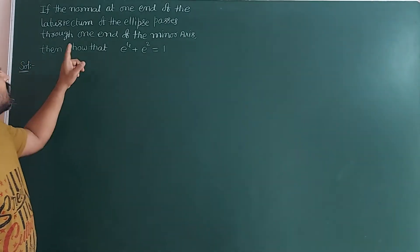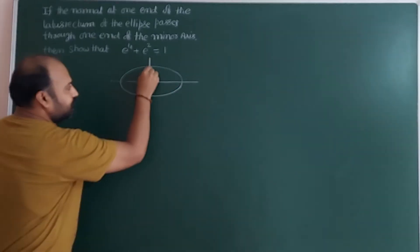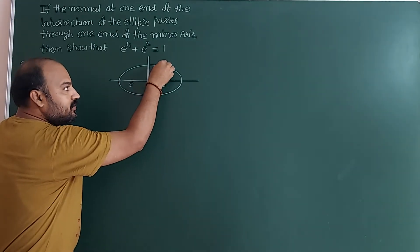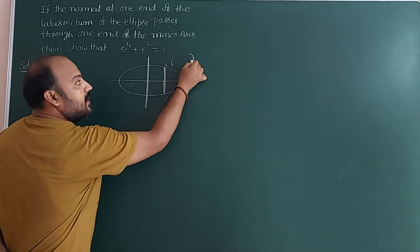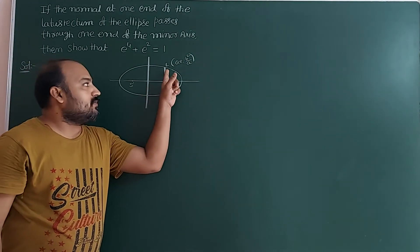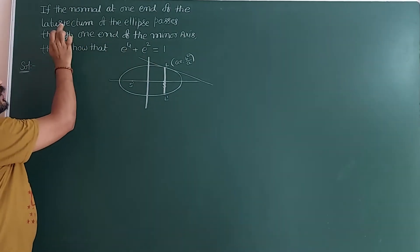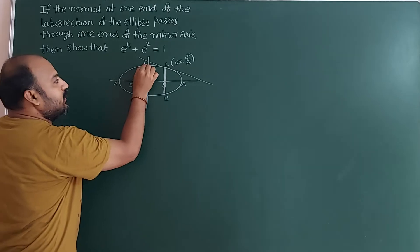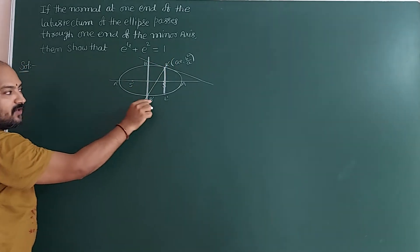If the normal at one end of the latus rectum of the ellipse — first draw the figure. This is the ellipse figure. The chord passing through the focus is called the latus rectum; the ends are L and L'. The one end of the latus rectum is (ae, b²/a). Here, AA' is the major axis and BB' is the minor axis. The line perpendicular to the tangent is the normal, which passes through one end of the minor axis B'.